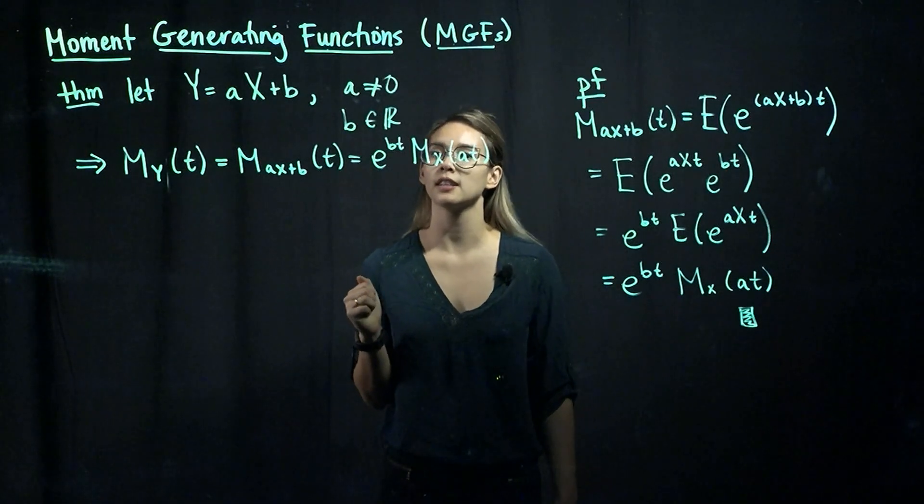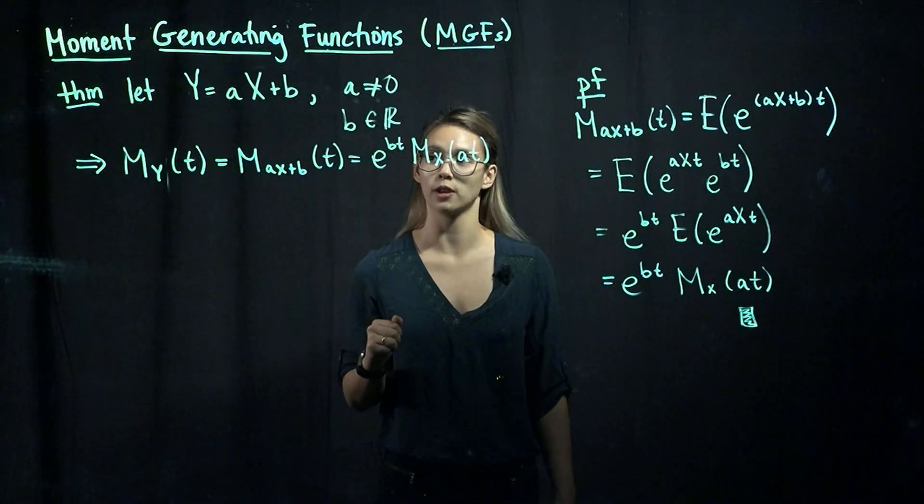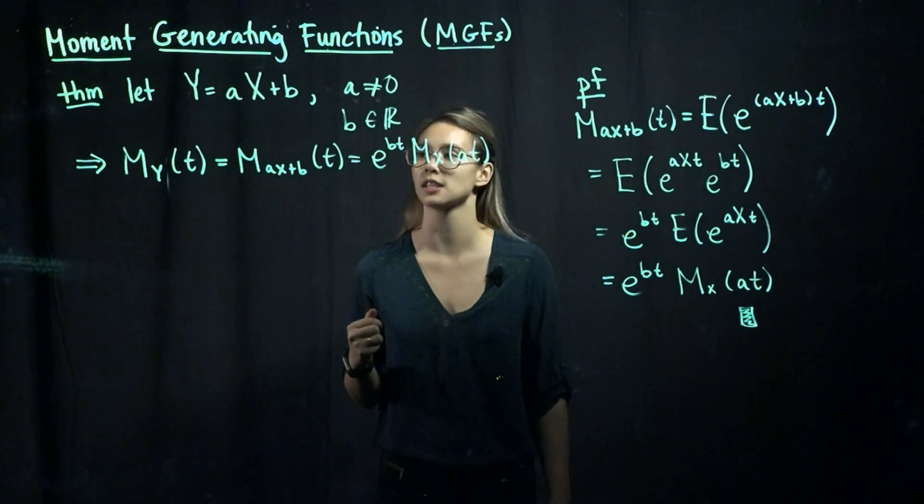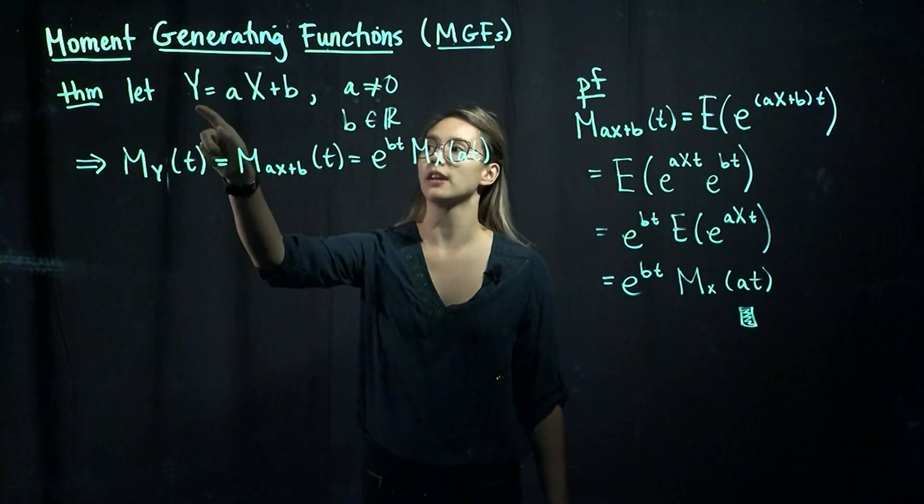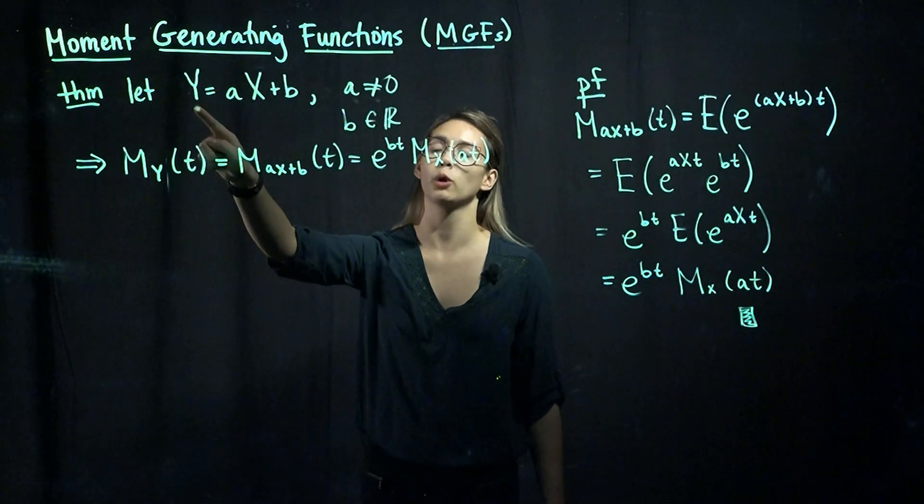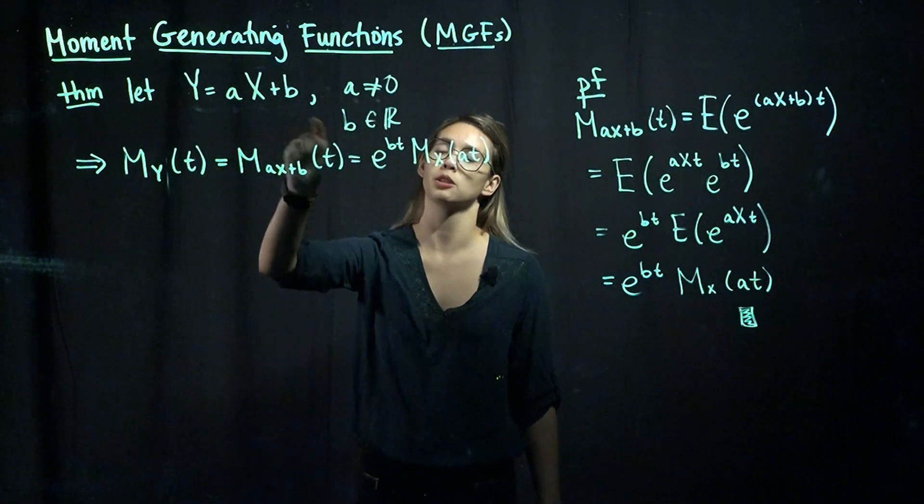And let's think about b being any real number. So if x has a moment-generating function, so in other words, if that expectation exists, then we can pretty easily find the moment-generating function for y, where y is equal to ax plus b.